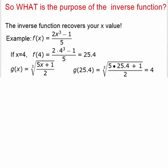Here we have a function 2x cubed minus 1 over 5. We plug 4 into this function and we end up getting 2 times 4 cubed minus 1 divided by 5 equals 25.4. So when our x value is 4, our y value is 25.4. If we plug 25.4 into our inverse function, we get back that x.